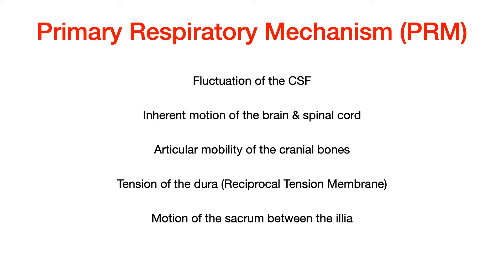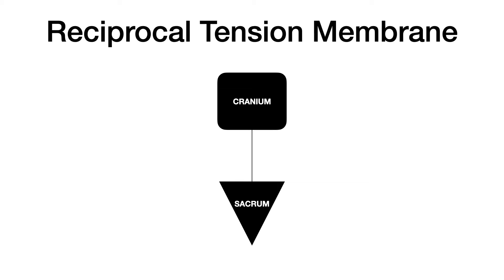If we hone in on item number four — tension of the dura, also known as the reciprocal tension membrane — this is really just a microcosm of what was just discussed. The cranium and the sacrum are connected specifically by the dura, represented by the orange lines on this slide. Therefore, somatic dysfunction at the cranium will affect the sacrum and vice versa. Now that you understand the interconnectedness of cranial and sacral bones, let's get into an overview of today's video.